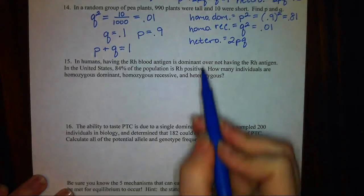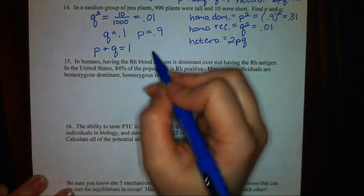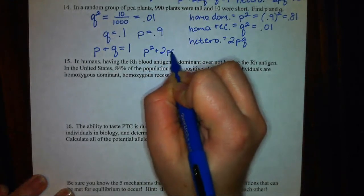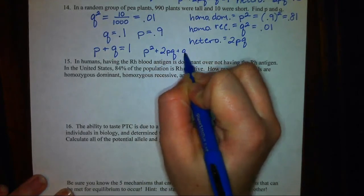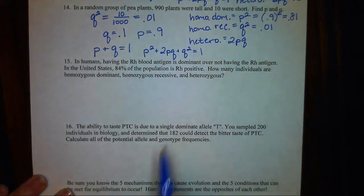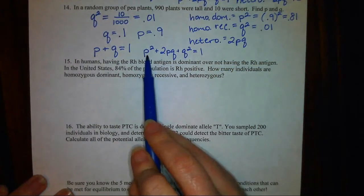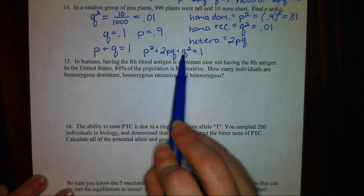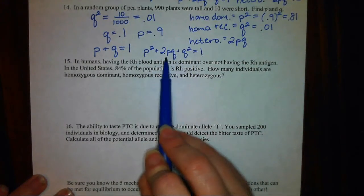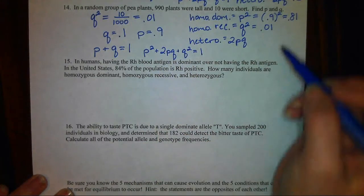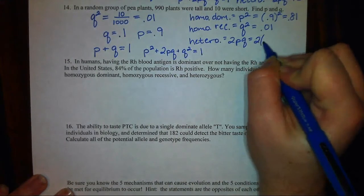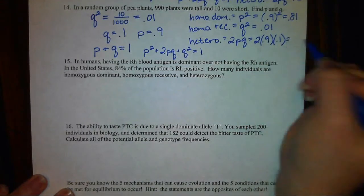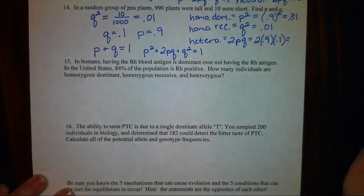Now our last category, heterozygous. I can either go back to my equation, P squared plus 2PQ plus Q squared equals 1, and think to myself, I know P squared and I know Q squared. So if I add those two up and subtract it from 1, I'll get my third category. Or I can do 2 times P times Q to get my heterozygous individuals.